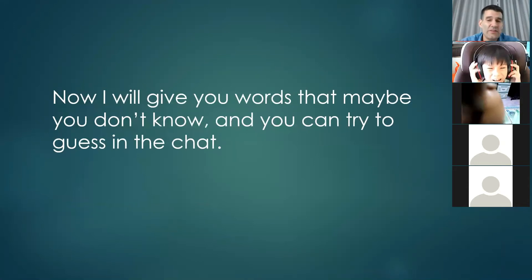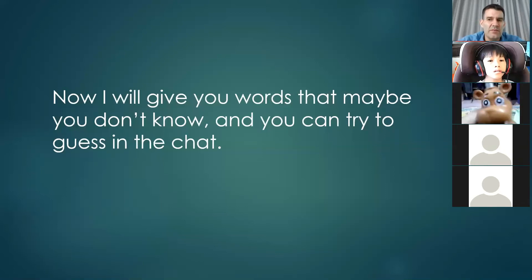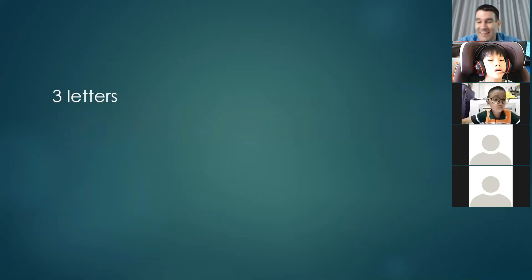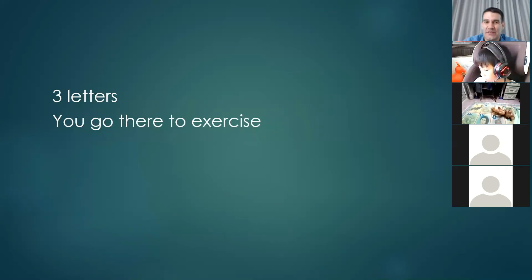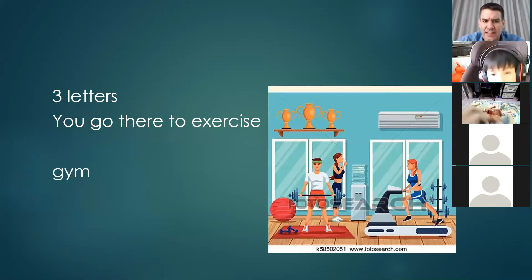Okay, that was a review. Now I will give you words that maybe you don't know — these are a bit less common. If you know them, you can guess in the chat; if not, that's okay. The first one is only three letters — you go there to exercise. Yes — this is a gym. You do not say 'guyum' or 'gim' — the G makes a J sound in 'gym.'